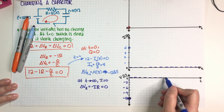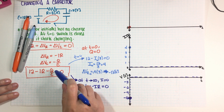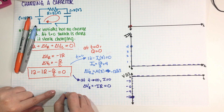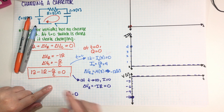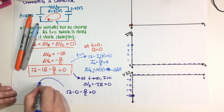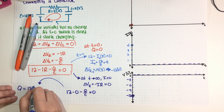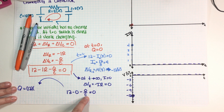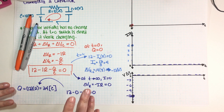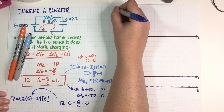So that graph ends at zero. Now we need the final value of Q. Substituting into the loop rule: 12 minus 0 (since I equals zero) minus Q over C equals zero. So the final Q equals 12 times C. C equals 2, so this is 24 Coulombs. The charge graph starts at zero and ends at 24.